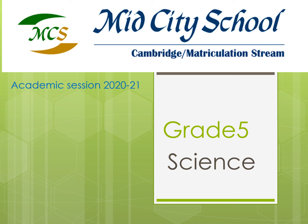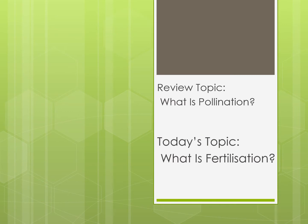Assalamu alaikum, university students and welcome to the academic session 2020-21. Today is the 9th lecture of science for grade 5. A short review of the previous topic: what is pollination? Pollination is the transfer of pollen grains from the anther to the stigma of the same flower or another flower. Flowers may be pollinated by wind or by insects.